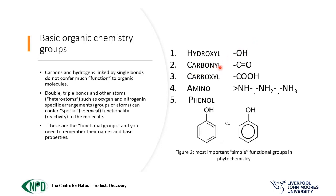Otherwise called alcohol. Then we have the carbonyl, which is when the carbon atom is double-bonded with oxygen. We have the carboxyl, which is an acidic functional group — it's when the carbon is linked by a double bond to an oxygen, which is a carbonyl plus a hydroxyl. So the carboxyl is a combination of the carbonyl plus the hydroxyl.